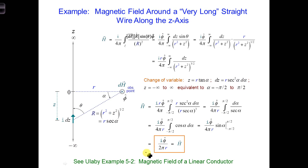So, in the end, we get the magnetic field circulating around the wire is oriented in the phi-hat direction, and it depends on the amount of current flowing and the radial distance from the wire.